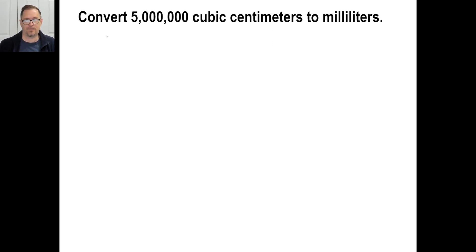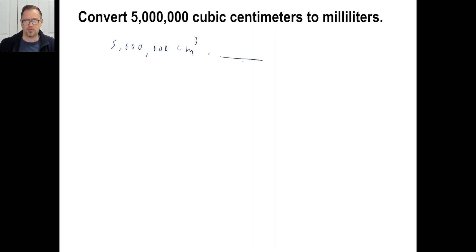Newsflash: a cubic centimeter is the same thing as a milliliter. So if you have 5 million cubic centimeters, you have 5 million milliliters. You could set up the conversion fraction with cubic centimeters on the bottom, realize a cubic centimeter equals a milliliter, and just go 5 million times 1. So the answer is 5 million milliliters.